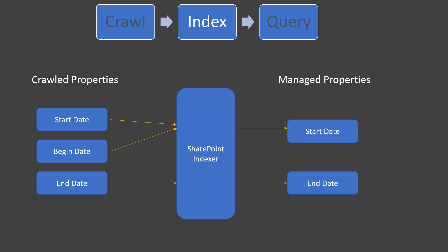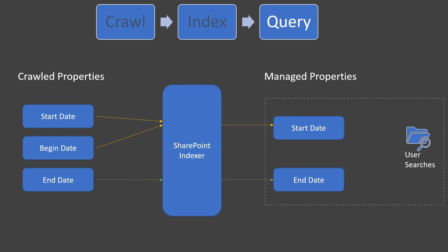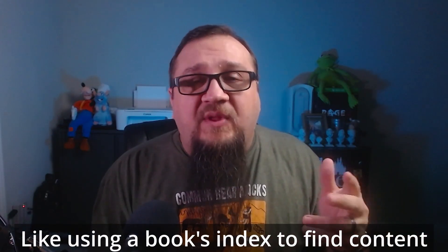Once the mapping is done, your data is ready to be searched by users. One important thing to note: when users search SharePoint, they are not searching the lists and libraries. They are not searching your crawled properties. They are only searching your managed properties and the full text index — the processed data, not the source data. That's why searching is fast and powerful, with the property searching we'll be showing when we get into the video that covers user searches.